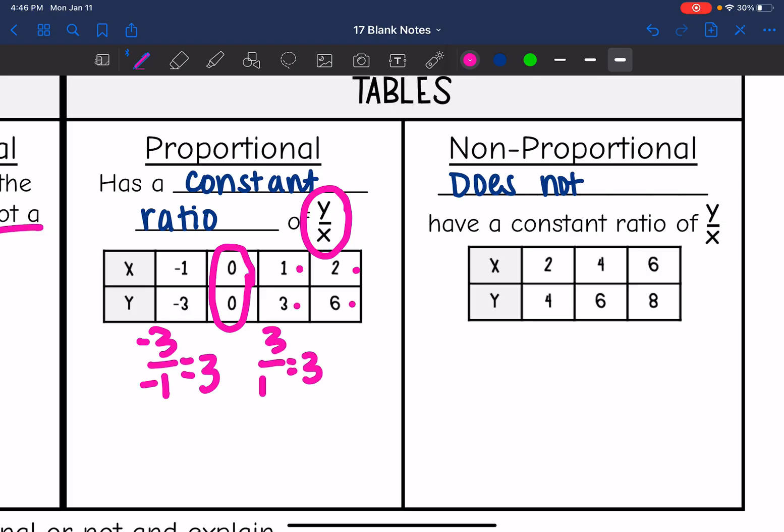So let's go to the next one. 3 divided by 1 is also 3, and then this one, 6 divided by 2 is also 3. So we have that constant ratio here of 3, which means this is proportional.